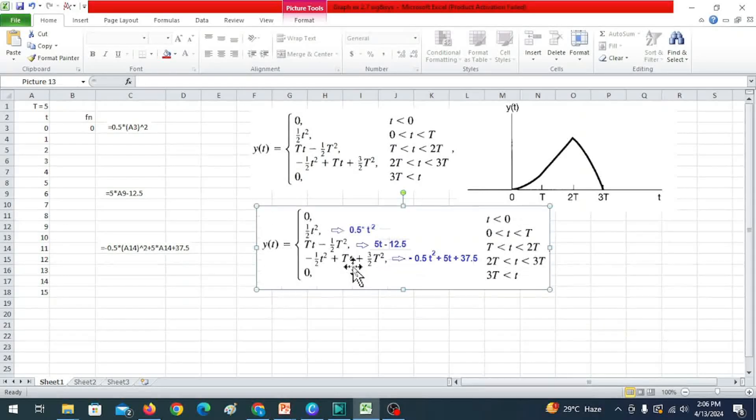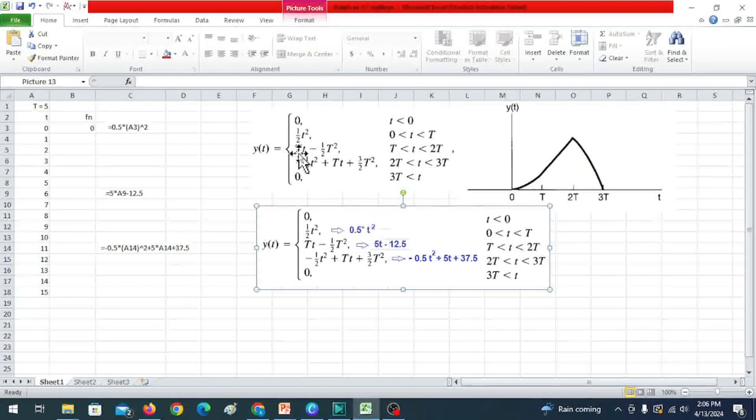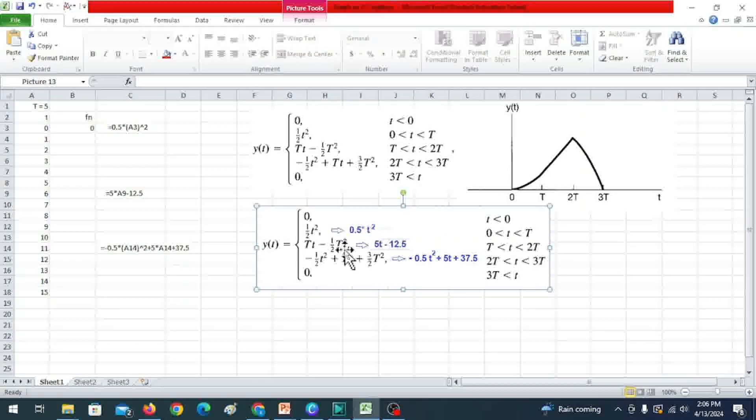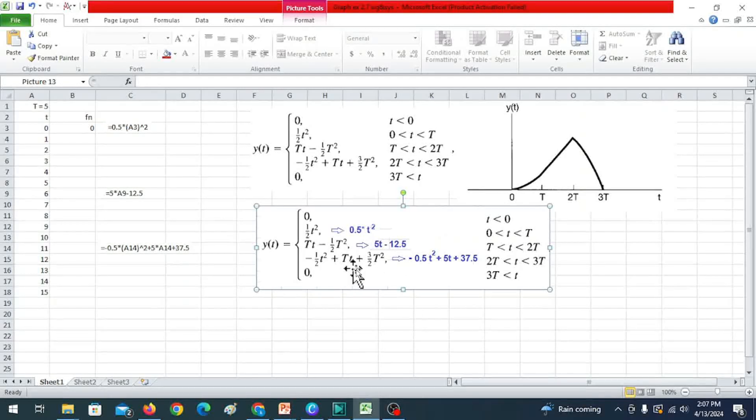And then let me put the values here. Now a half T squared can be written as 0.5 T squared. Similarly, it is 5T. Now 5 will be 5T minus 1.5 T squared. T is 5. So 1.5 of 5 squared will be 12.5. And similarly this one of these three equations we enter here.